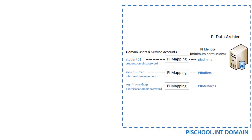Let's take a look at some details of our environment. On the PI School domain, we have our two service accounts — SVC PI Buffer and SVC PI Interface — and a Student01 user account with their domain passwords. These service accounts are used across the domain for other interface nodes connecting to the PI Data Archive. The two service accounts have been provided minimum permissions needed on the archive through PI Mapping, and Student01 is mapped to PI Admins.